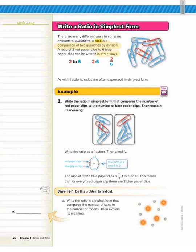The three ways that we write a ratio is with the word two, so two to six. Sometimes we use a colon, two colon six, or a fraction, two over six. As with fractions, ratios are expressed in simplest form.